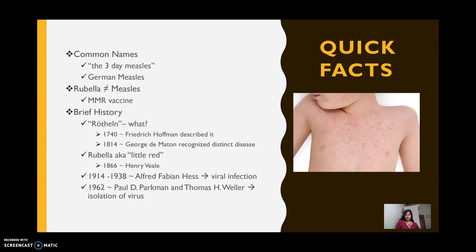Here are some quick facts about the illness. Some common names for rubella include the three-day measles and German measles. We refer to it as the three-day measles mostly because it is a less severe case of the better-known measles illness and it usually only lasts about three days. We refer to it as the German measles mostly because it was first described and discovered by a bunch of German physicians.